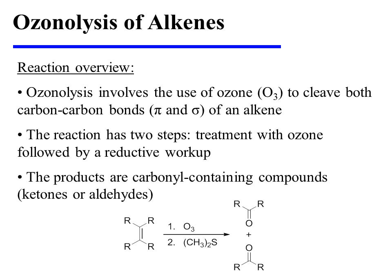The ozonolysis of alkenes involves the use of ozone to cleave both carbon-carbon bonds — both the sigma and the pi bond of an alkene. The reaction has two steps: treatment with ozone followed by a reductive workup, and the products are carbonyl-containing compounds, namely ketones or aldehydes.